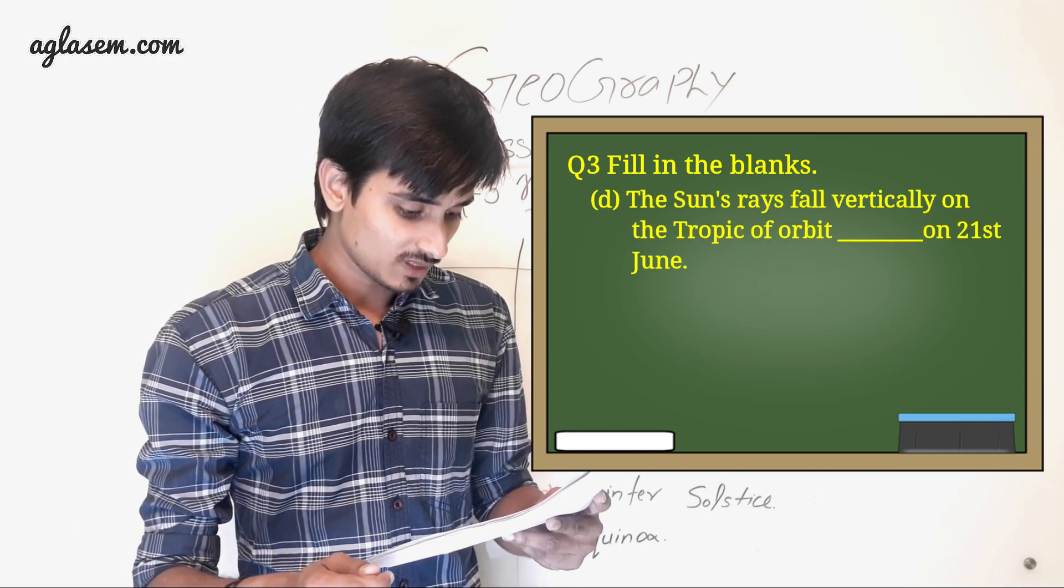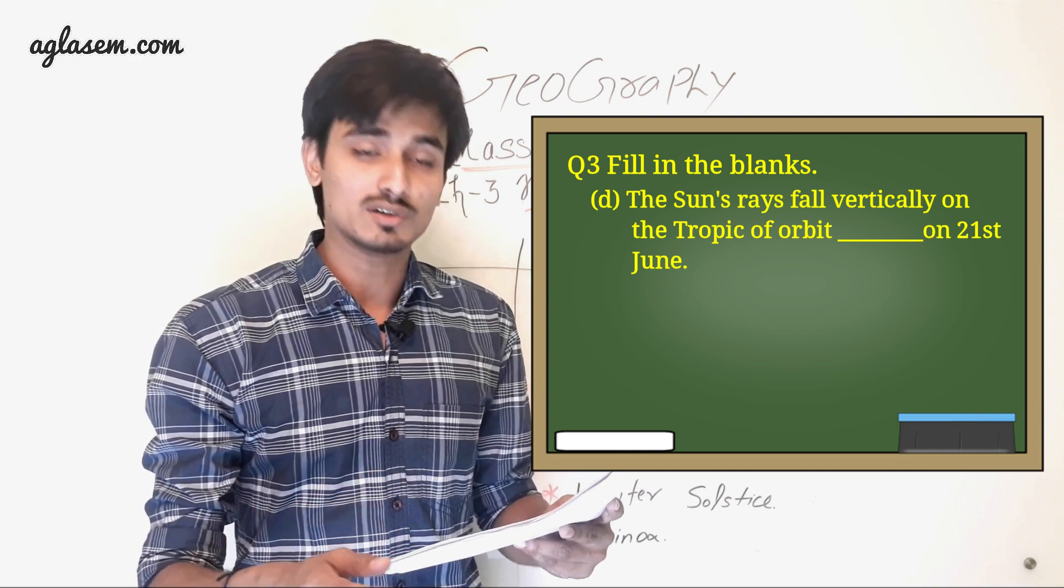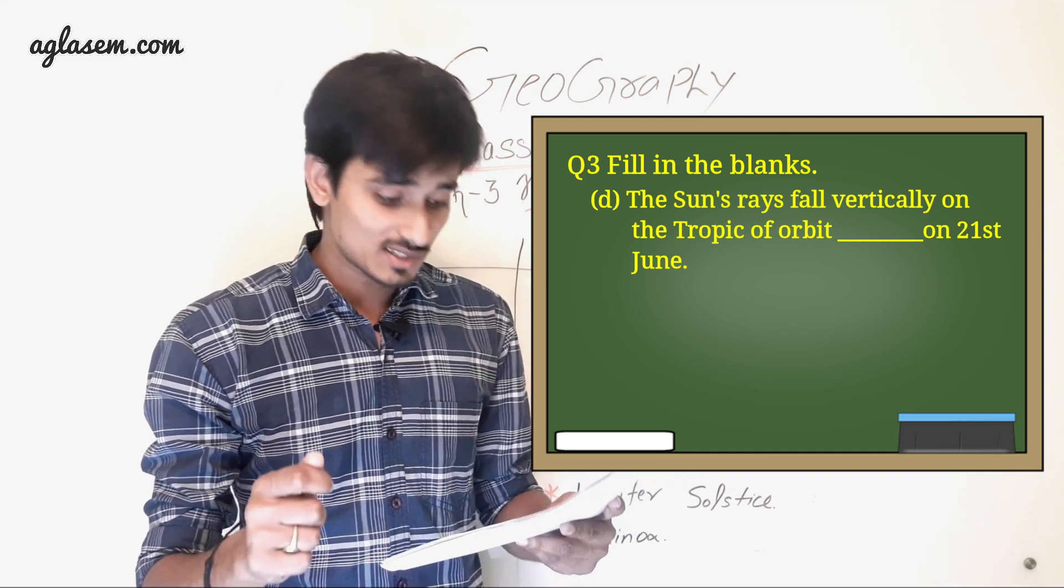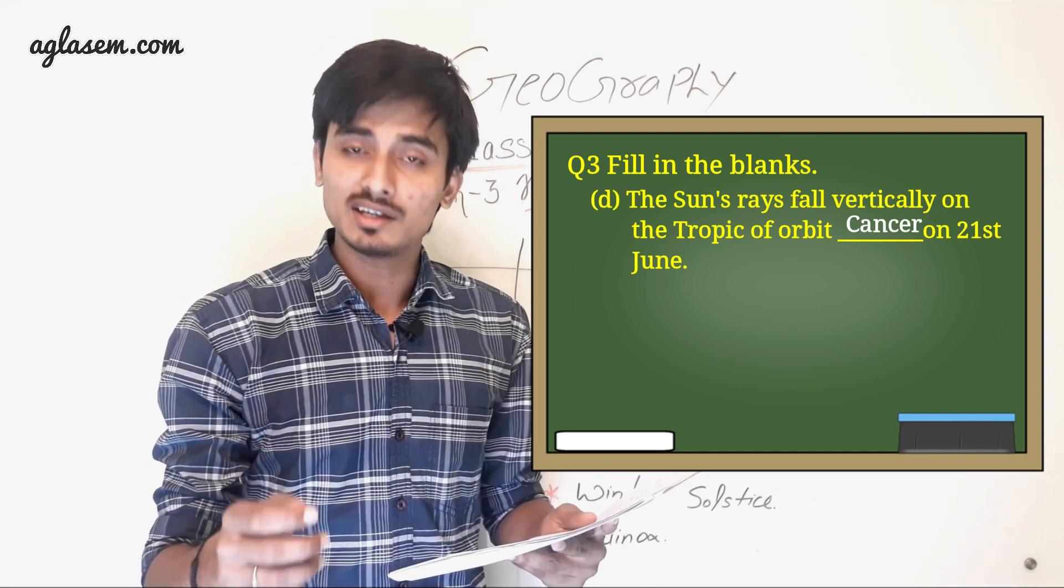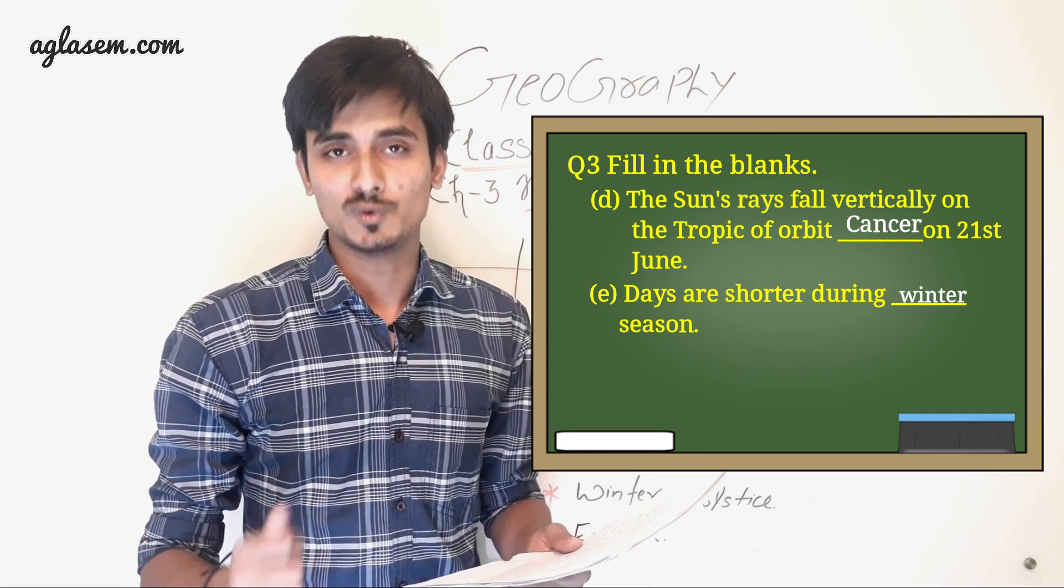D. The sun's rays fall vertically on the tropic of dash on 21st June. So answer is cancer. E. Days are shorter during dash season. So answer is winter.